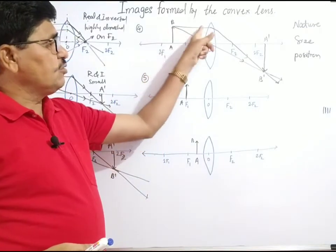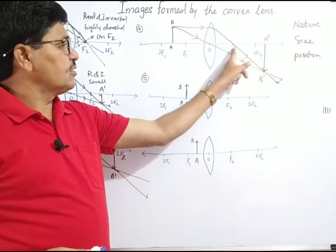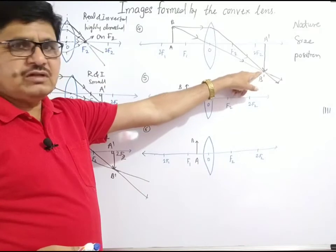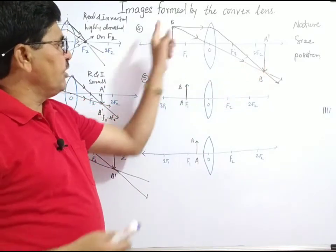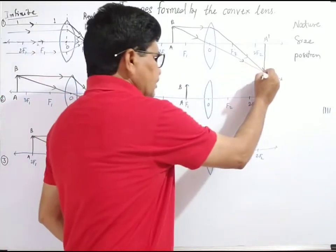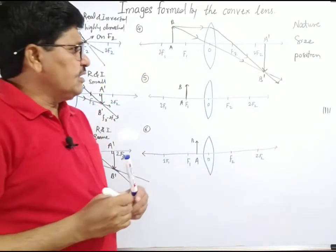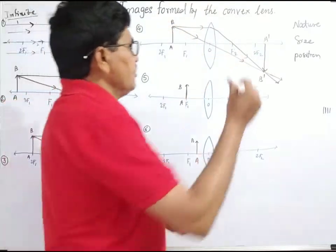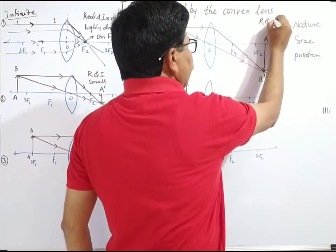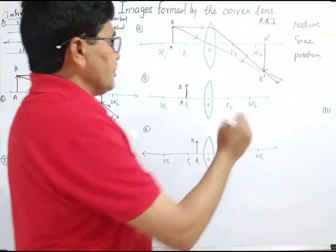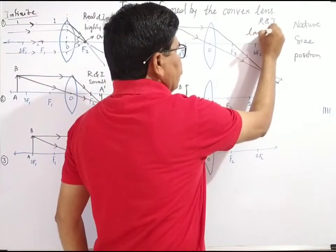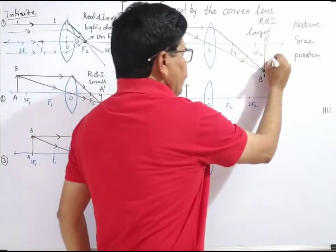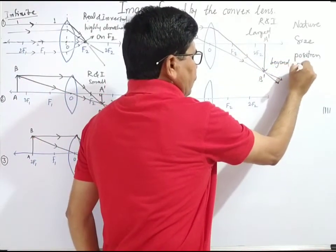The object ray is parallel to the principal axis; after refraction, it passes through the focus. The second ray passes through the optical center without any deviation. After refraction, they meet together at a point — that is the image of point B. The nature of the image is real and inverted. Size is large as compared to the size of the object, and position is beyond 2F2.